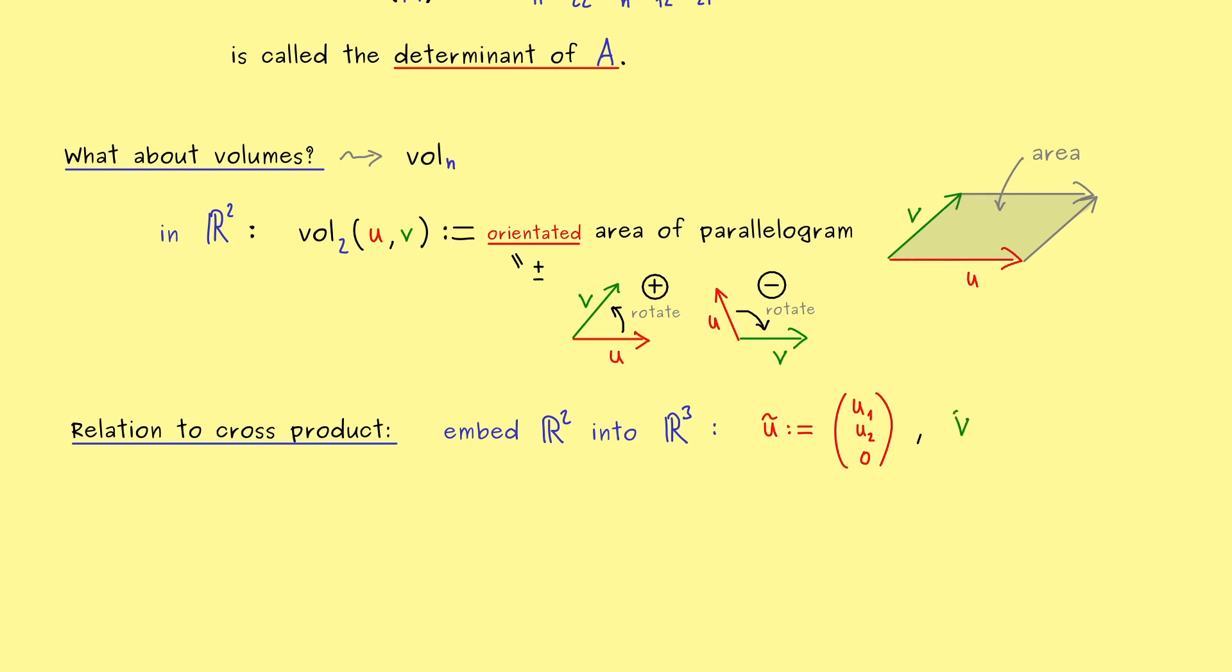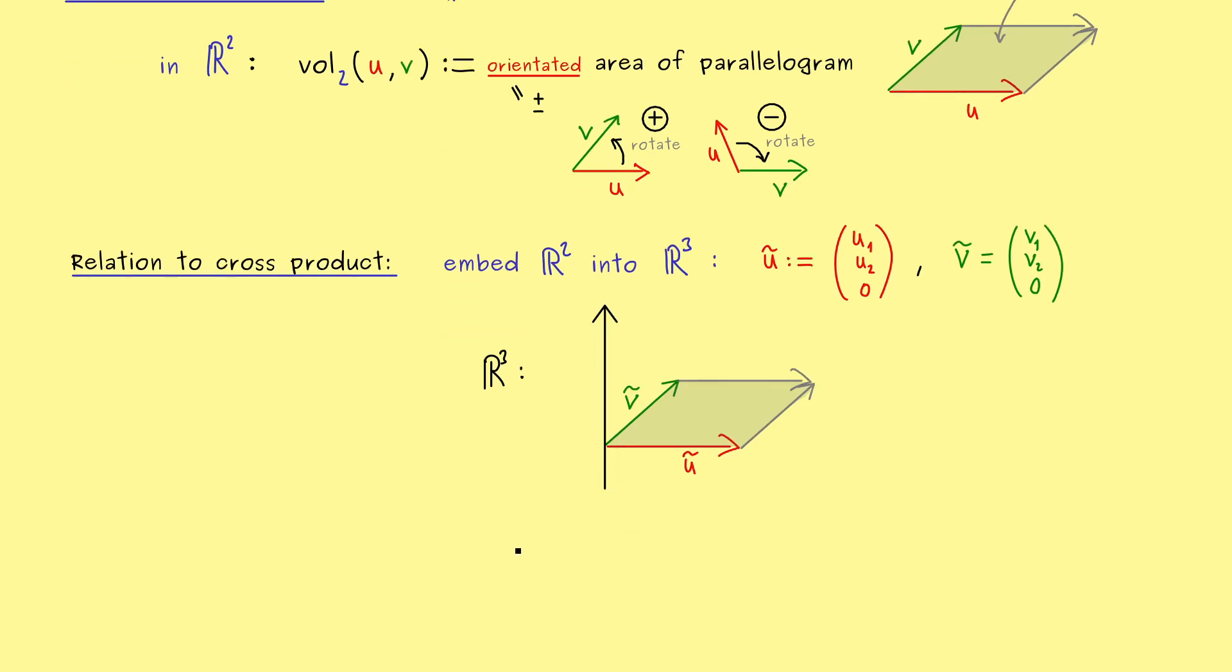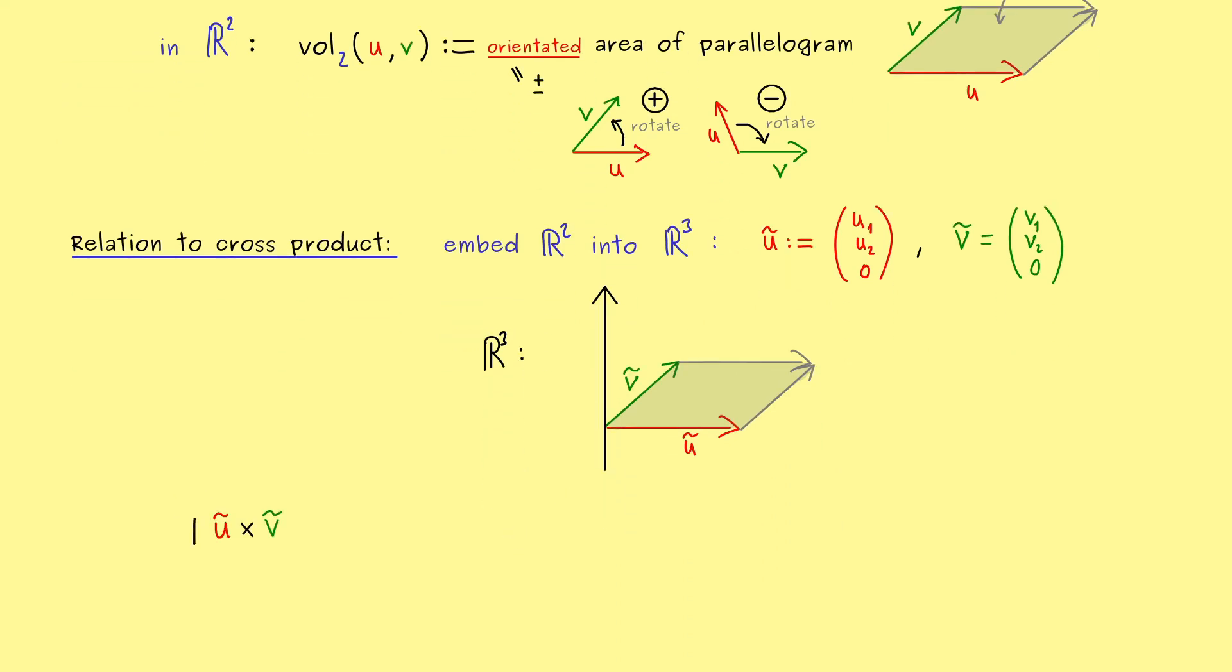And it has the same components as u for the first and second component but 0 for the third component. And of course the same we can do with v. So we have v₁, v₂ and then 0. So the pictures of the vectors would look the same but now there is an additional third axis. So this means now we are able to use the cross product defined in R³. And of course we have to use it for ũ and ṽ, and then we know that we get the area of the parallelogram by the length of the result of the cross product.